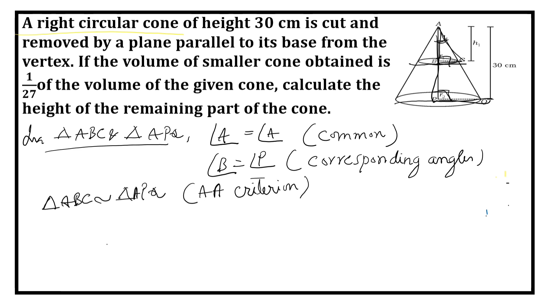So we know that in similar triangles their corresponding sides are in proportion. Which are corresponding sides here? It is AB by AP.